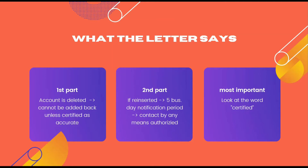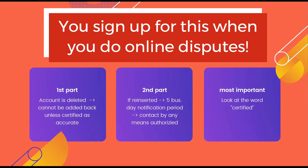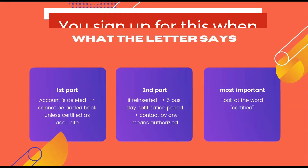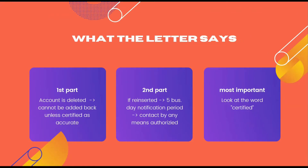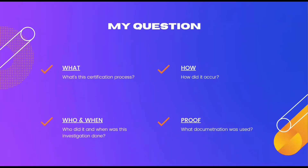The second part says that if an item is reinserted to your credit report, the credit bureaus are required to notify you in writing no more than five business days after they put it back on. They can also contact you by any other means you've given them, such as email or online notifications in your Experian dashboard if you signed up for electronic notifications. One of the most important things here is the word 'certified' — what's the certification process, how did it occur, who did it, what documentation was used, and when was this investigation done?